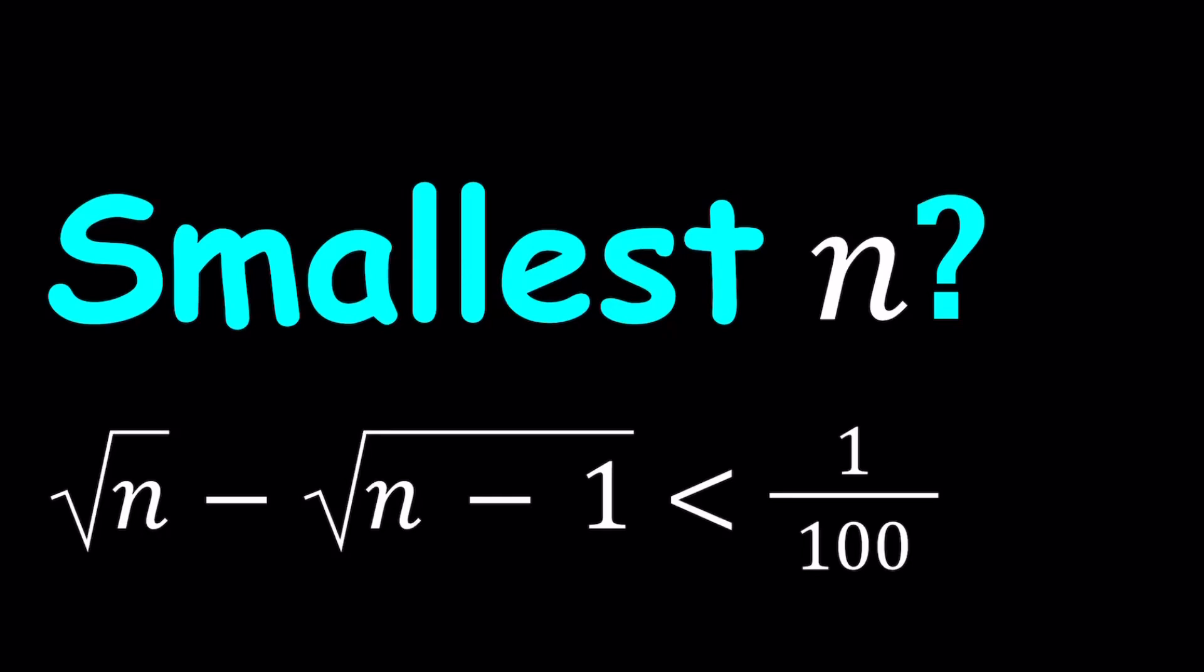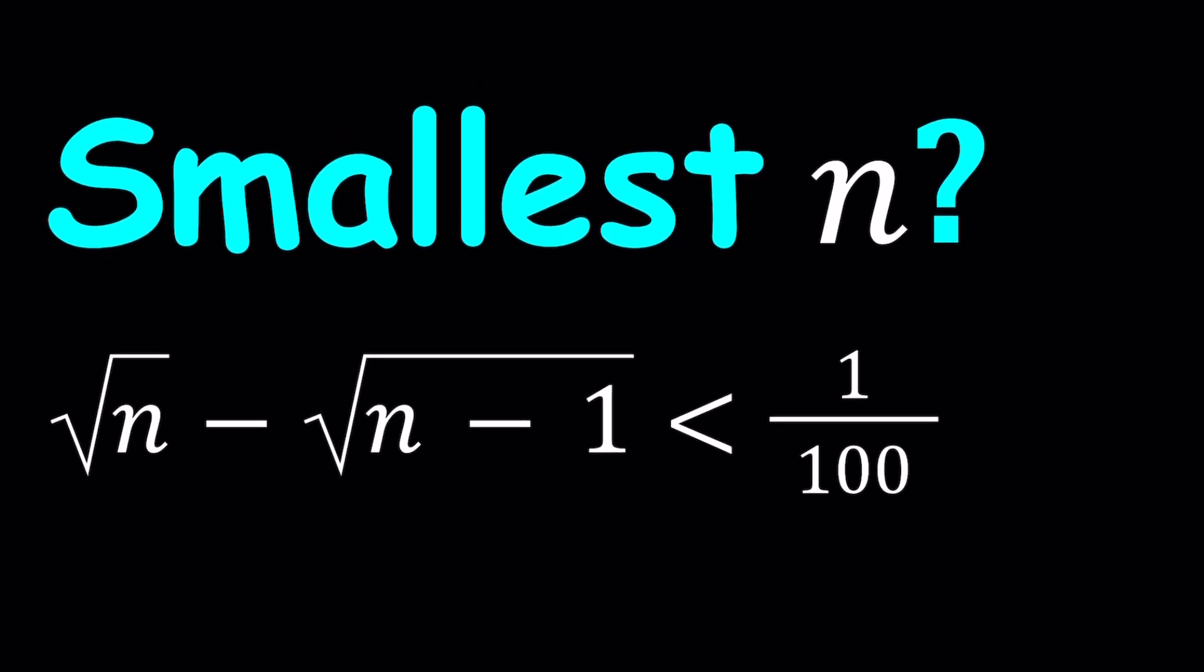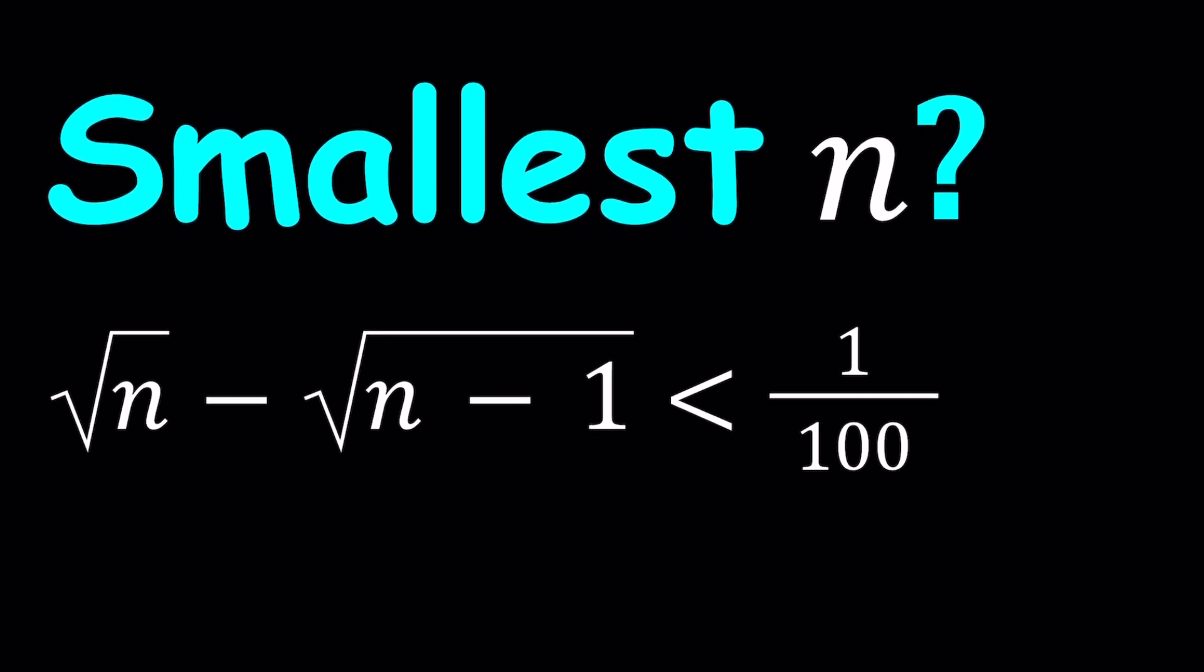Hello everyone. In this video, we're going to be solving a radical inequality. So we have square root of n minus the square root of n minus 1 is less than 1 over 100. And we're going to try to find the smallest integer value n that satisfies this inequality.